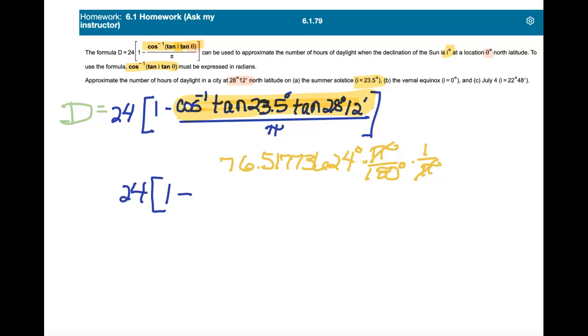And that answer is 0.425098534. And then plugging all this stuff into my calculator, my answer ends up being 13 and rounded off to two decimal places, 13.80 hours.